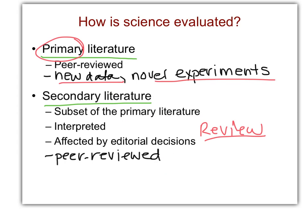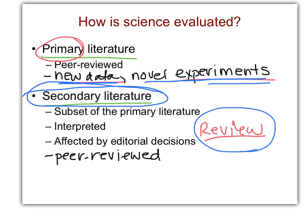Secondary literature is really great for when you want to learn about a topic but don't want to evaluate every single experiment ever done. Thousands of primary literature publications all boiled down into one review — so much easier to just read the review. And then if something doesn't look right or you want to know more about a specific part, you can go back and look at the references, where they got their information, all cited, and look at the primary literature involved in that review.